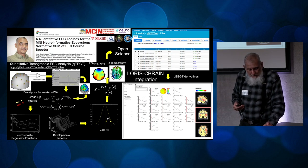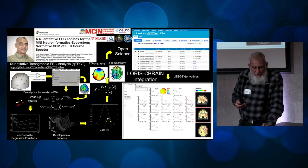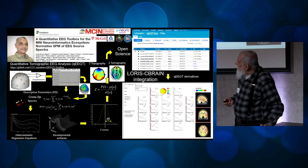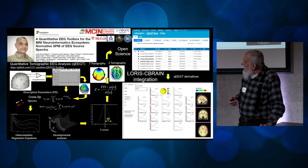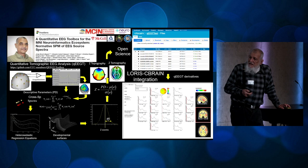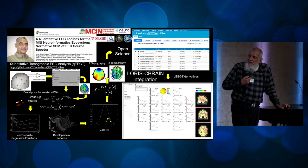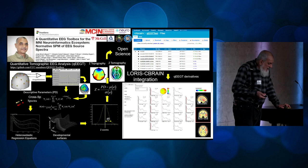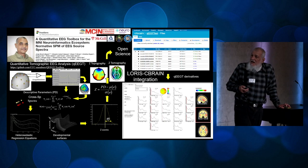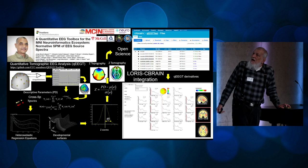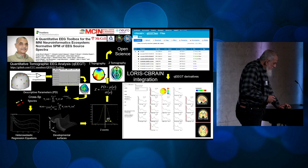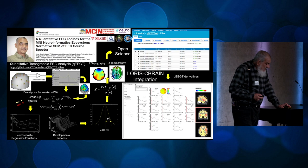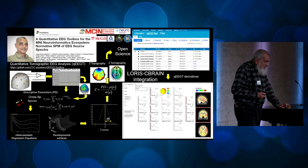We have developed and deployed on the Canadian Open Neuroscience Platform — specifically CBRAIN — open software and data that includes the developmental equations for the EEG spectrum at sources, allows comparison of specific subjects to obtain Z-transformed images, which you see on the right, and this has been used in many different settings where the only thing you need is an EEG machine.